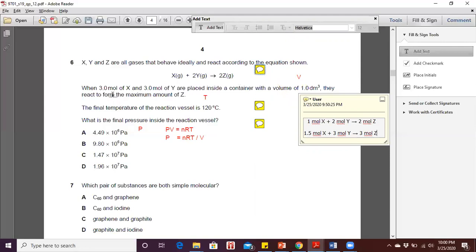Now the question says it is given three moles of X would react with three moles of Y. So from here, we are needed to find either X or Y, which one is the limiting reactant. Which one will be used up first?